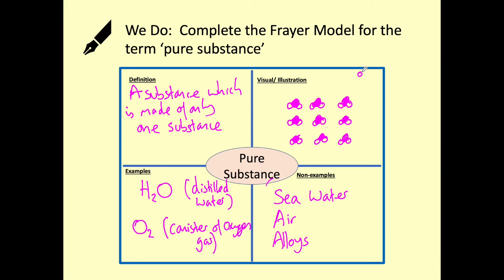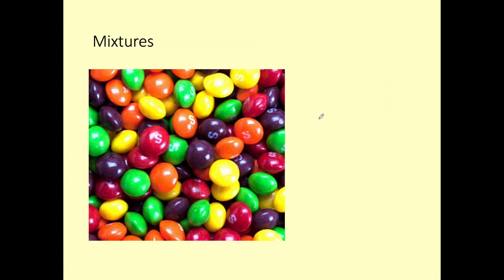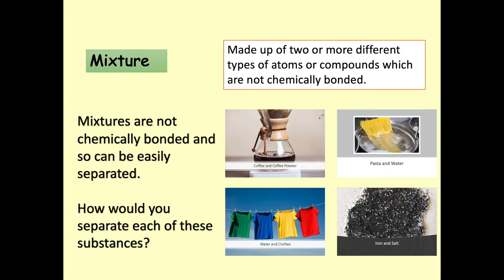Here my unshaded circles represent hydrogen and my shaded ones represent oxygen, illustrating H₂O. Now you can see lots of different types of substance in a mixture, but it is very easy to separate them — we could sort them out into red, green, orange, yellow, purple, simply by picking out the different types. It's very easy to separate the different substances in mixtures — it may not be as easy as separating skittles, but here are some examples for you to think about how you would separate each of those. Pause the video whilst you have a think.